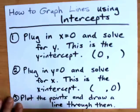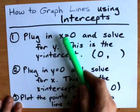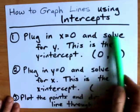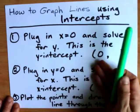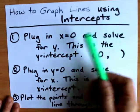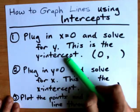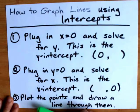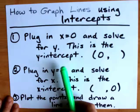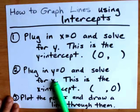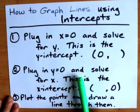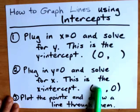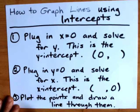The way to graph lines using intercepts is to plug in x equals zero and then solve for y in that smaller equation. The number that you get for y will be the y-intercept, and it will be a point that you can put onto the graph. Then separately, you're going to plug in y equals zero and solve for the x that's left over. That number is actually going to be the x-intercept, and that will be another point on the graph.